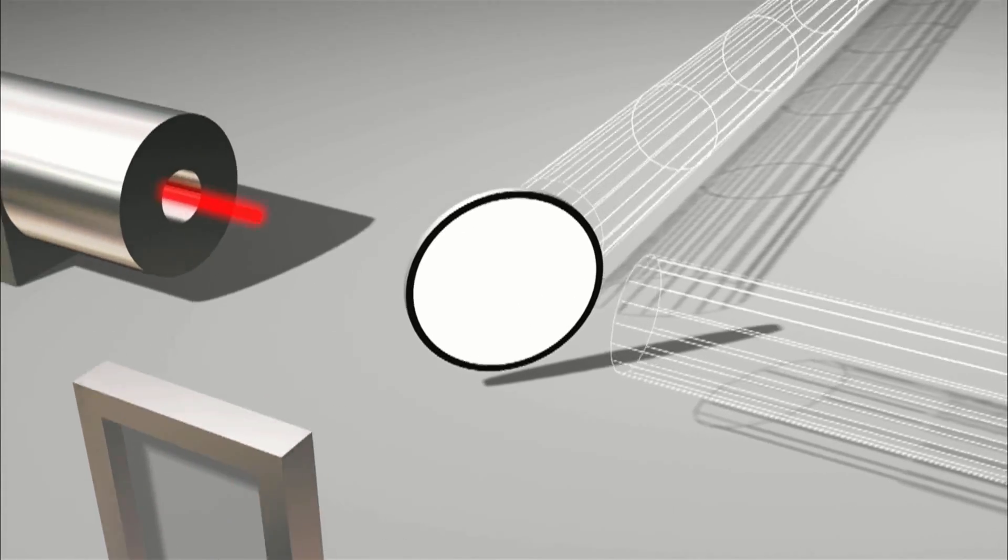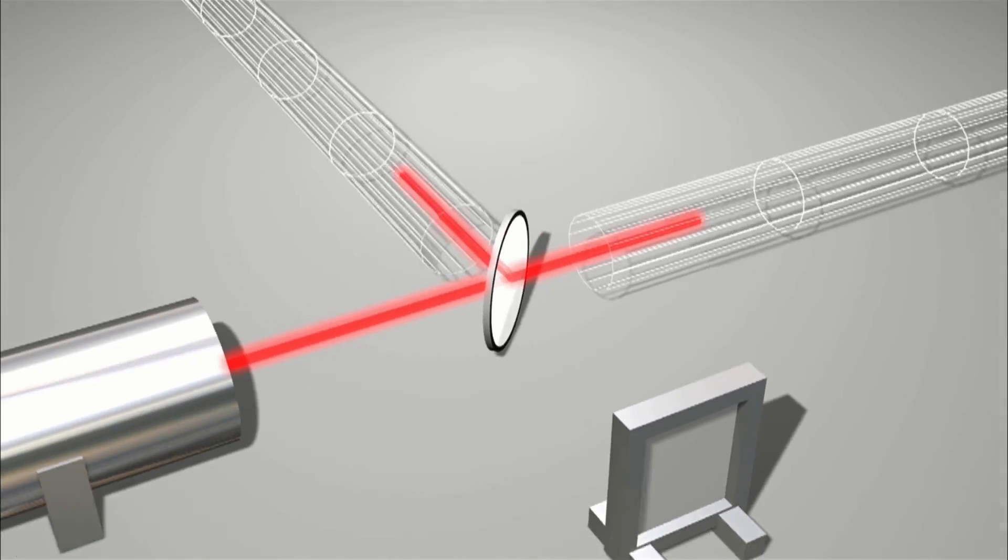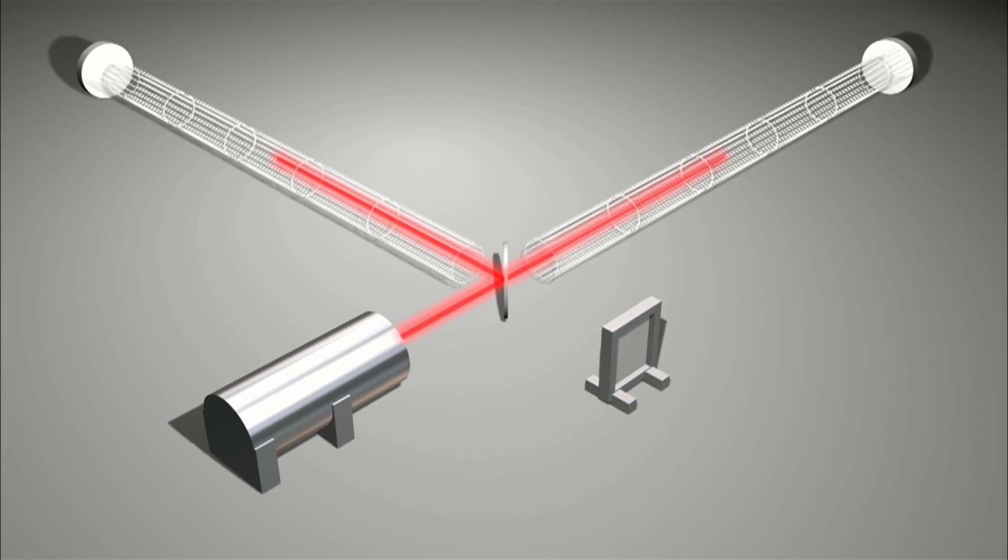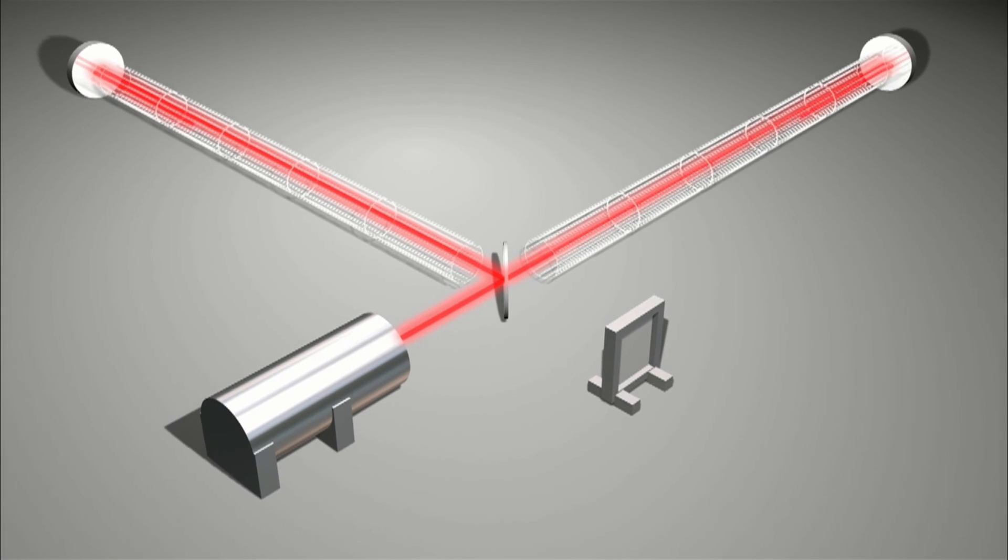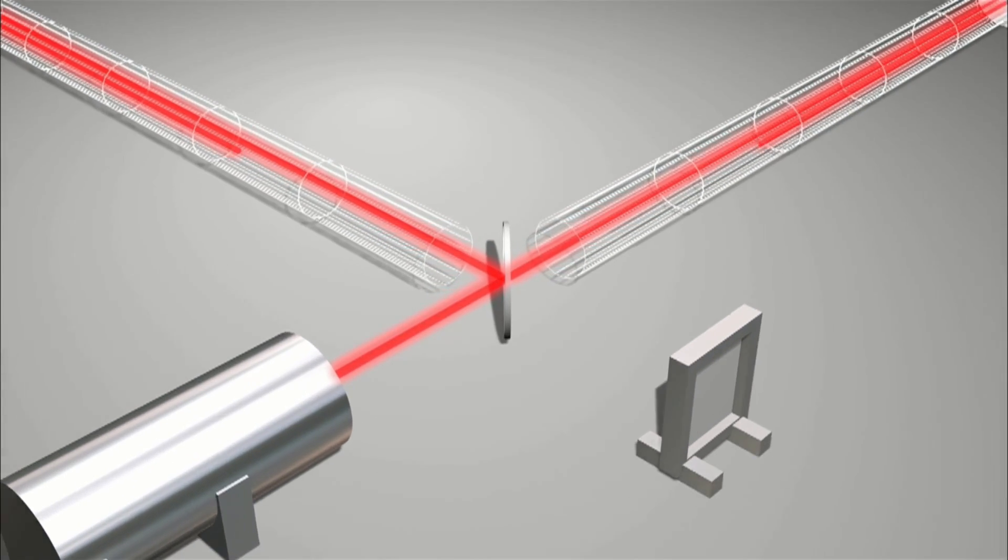A laser beam is split and sent down a pair of long perpendicular tubes, each precisely the same length. The two beams bounce off mirrors and recombine back at the base.